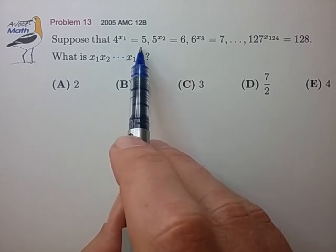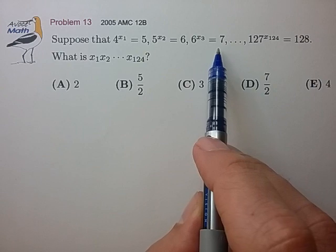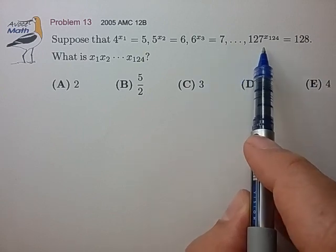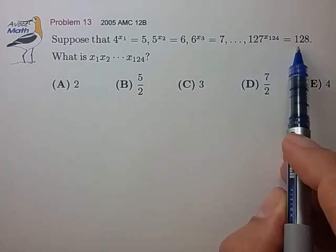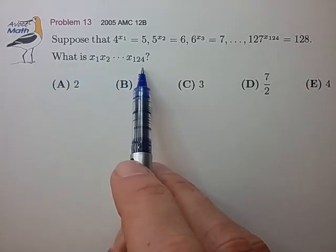Suppose that 4 to the x1 is equal to 5, 5 to the x2 is equal to 6, 6 to the x3 is equal to 7, and so on, out to 127 to the x124 is equal to 128. What is the product x1 through x124?